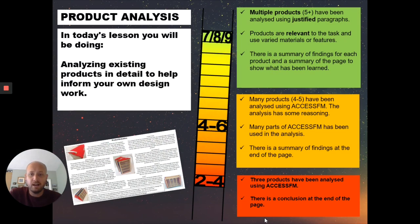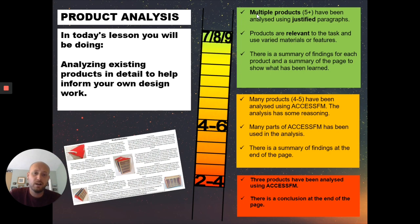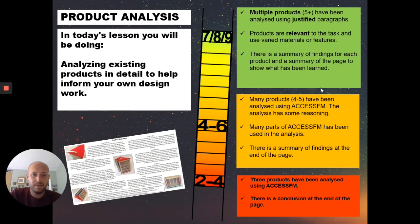NEA lesson two — we're going to look at analyzing some existing products. As it says on the level descriptor up here, we're analyzing multiple products that already exist, working alongside what we've identified in our problem for our potential idea. We're looking for analyzing with justified paragraphs — that's a very important word — five or more products. We're going to use ACCESS FM, which is a way of analyzing products to ensure we are thorough and analyze them against a range of criteria. You can see the level ladder here with descriptors, but really we all want to be aiming for the top level.